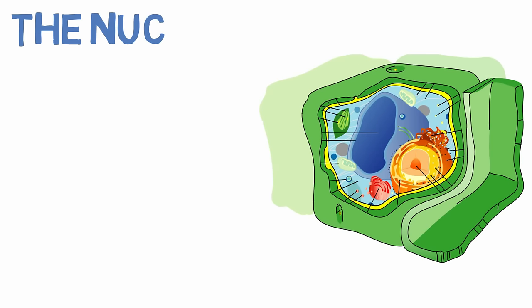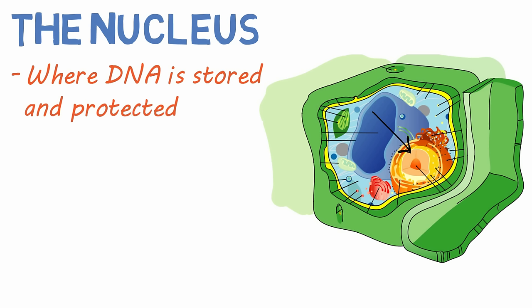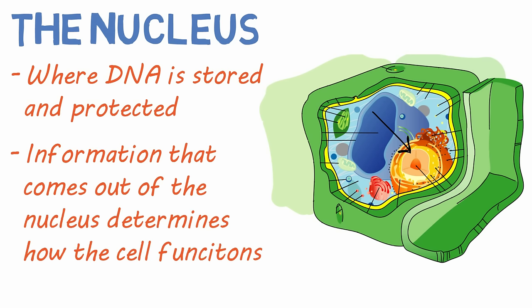The nucleus is the center of the cell, not necessarily in location, but in function. This is where your DNA is stored and protected. The DNA is read by special proteins and transcribed into RNA to be translated into proteins. Information that comes out of the nucleus determines how the cell functions and, ultimately, how your genes are manifested.